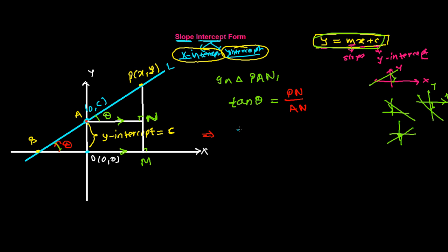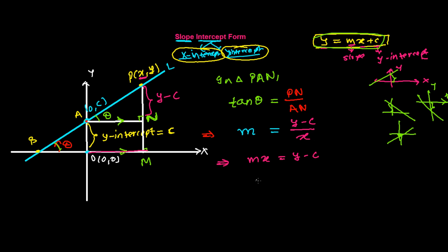tan θ, which is the slope m, equals PN over AN. Now PN: the total length from P down is y, and the portion from the x-axis to A is c, so PN = y − c. And AN equals OM, which is the x-coordinate, so AN = x. Therefore m × x = y − c, and rearranging gives y = mx + c. This is the required equation.